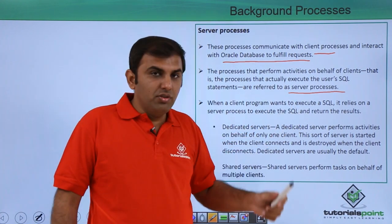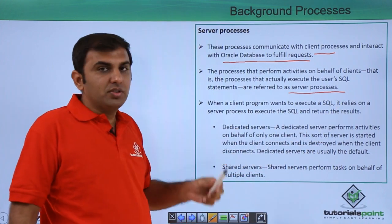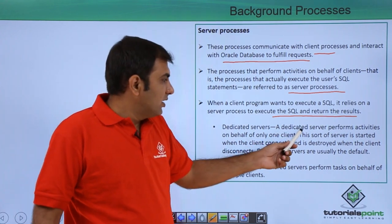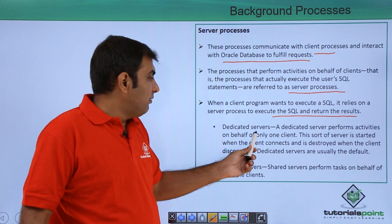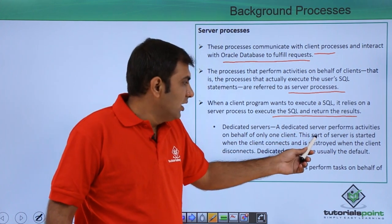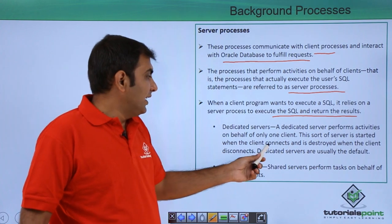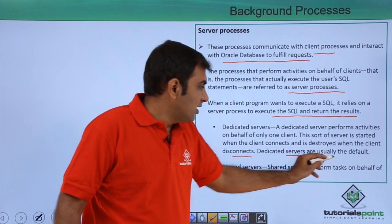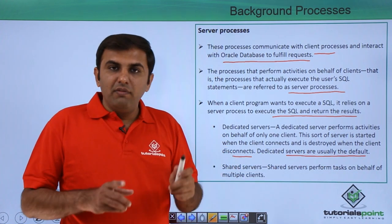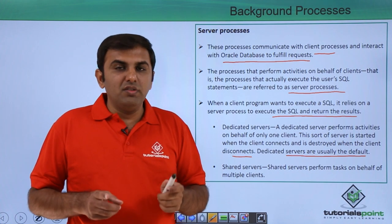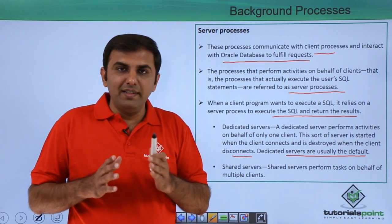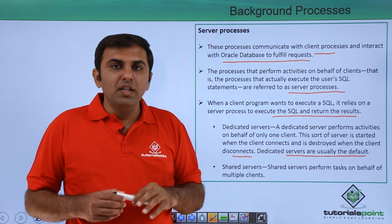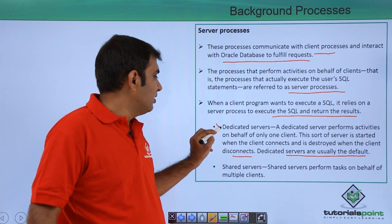When the client program wants to execute SQL it relies on the server process to execute the SQL and return the results. In the dedicated server environment, the dedicated server performs activities on behalf of only one client. This server is started when the client connects and destroyed when the client disconnects. Dedicated servers are the default. When the client connects, one server process is established; when the task is done and the client disconnects, the server process is deactivated. By default in Oracle database, you have a dedicated server environment.